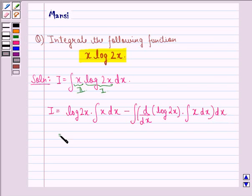This will be equal to log 2x into integral of x dx, which is x square by 2, because we know integral x raised to power n equals x raised to power n plus 1 by n plus 1. In this case n is 1, so we get this minus integral of...